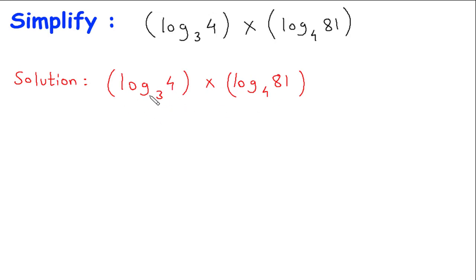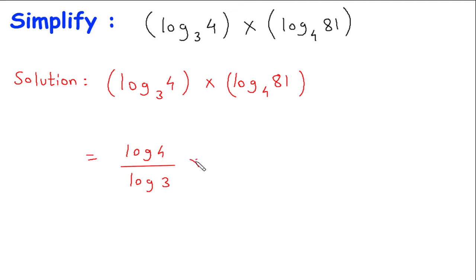We can write log of 4 to the base 3 as log of 4 divided by log of 3, multiplied by log of 81 to the base 4, which we can write as log of 81 divided by log of 4.